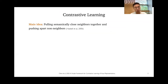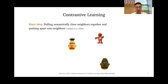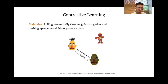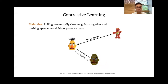What is contrastive learning? The general idea is very simple: to learn good representations, we want to pull semantically close neighbors together and push apart non-neighbors. For example, to learn good representations for Sesame Street characters, we'd want a bird image to be close to a similar bird and far away from Elmer. In computer vision, a paper called SimCLR, or Simple Framework for Contrastive Learning of Visual Representations, showed that contrastive learning can learn good representations even comparable to supervised counterparts, which is also a great motivation for our work.